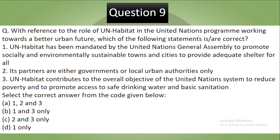Question 9: With reference to the role of UN-Habitat and the United Nations program working towards a better urban future, which of the following statements are correct? Statement 1: UN-Habitat has been mandated by the United Nations General Assembly to promote socially and environmentally sustainable towns and cities and to provide adequate shelter for all. Statement 2: Its partners are either governments or local urban authorities only. Statement 3: UN-Habitat contributes to the overall objective of the United Nations system to reduce poverty and to promote access to safe drinking water and basic sanitation. Pause the video and try to answer. Your correct answer is B.